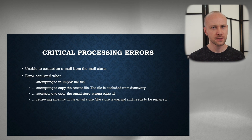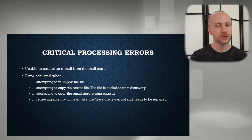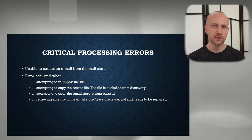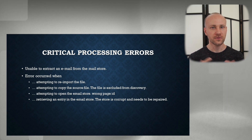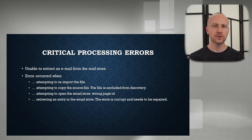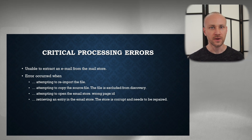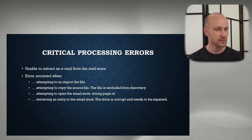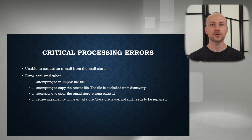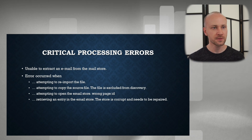Usually when you get a message "Unable to extract email from a store," it indicates that you have a corrupt PST file. Relativity doesn't read PST files like other applications — it doesn't do it like Outlook does. Relativity wrote their own algorithm that goes into a PST and rips it apart. That's what allows it to be so fast and efficient, however it also makes it more sensitive than normal to minor inconsistencies inside the PST file.